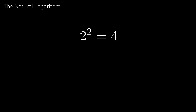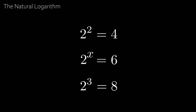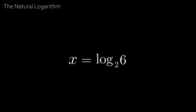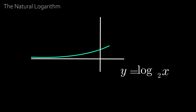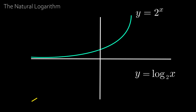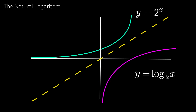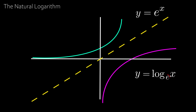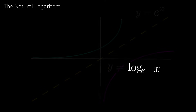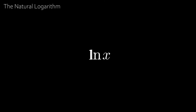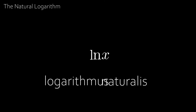We know that 2² = 4 and 2³ = 8, but 2 to the power of what equals 6? We write this as log base 2 of 6. Consider y = log₂(x): if we take the graph of y = 2ˣ and reflect it in the line y = x, we get the inverse function y = log₂(x). Replacing 2ˣ with eˣ, its reflection in y = x becomes y = logₑ(x), famously written as ln(x), which stands for logarithmus naturalis — Latin for natural logarithm.